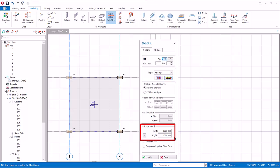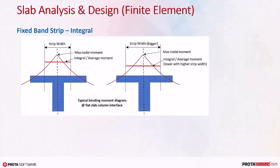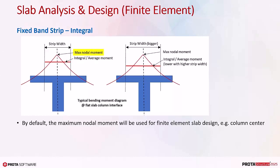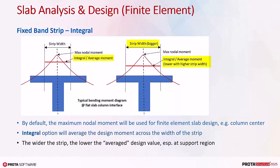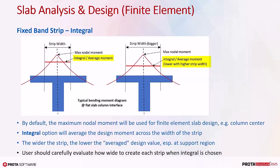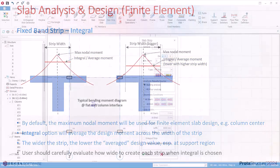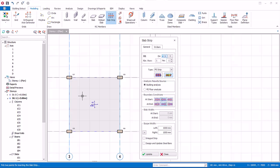The extent scope by default is one meter left and one meter right, giving a total of two meters width. The integral option allows the design moment to be averaged. This diagram shows a typical bending moment diagram at the flat slab and column interface. By default, the maximum nodal moment will be used for the FE fixed band strip design — for example, right at the peak at the center line of the column. The integral option will average the design moment across the width of the strip, so the wider the strip the lower the average design value, especially at the column support region where the moment changes abruptly. The user should carefully evaluate how wide to create each strip when integral is checked, otherwise the design may be too unconservative.